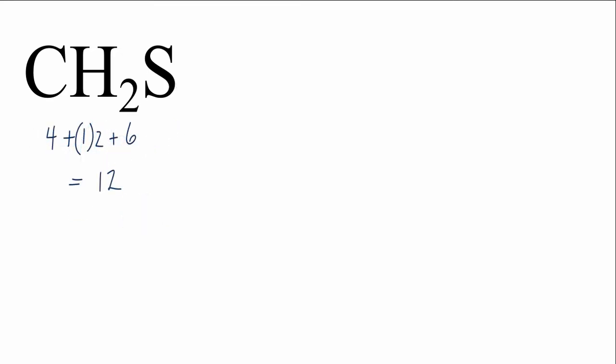We'll put the carbon there in the center, and then we'll put the hydrogen on one side here, and let's put the S right here above. So we have 12 total valence electrons.